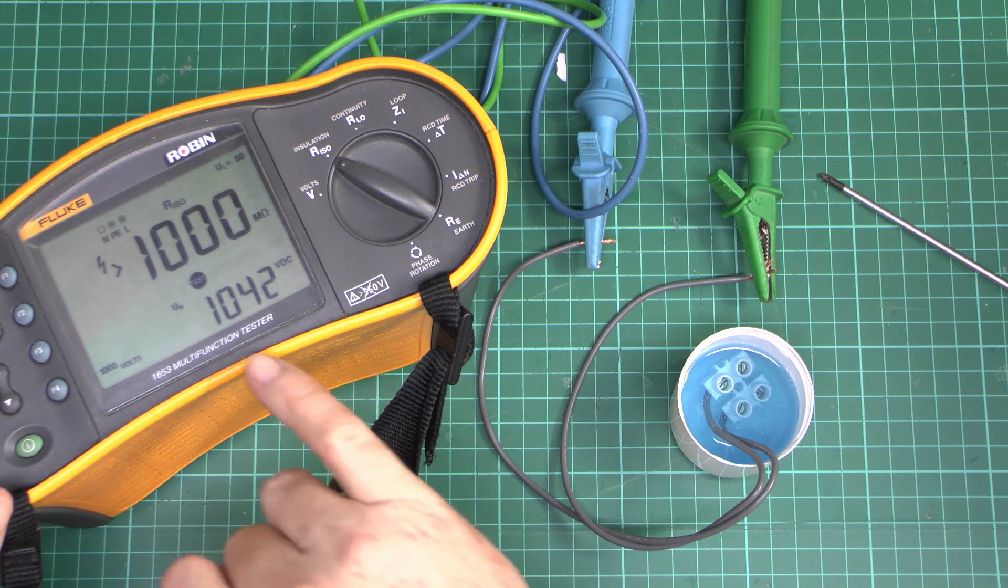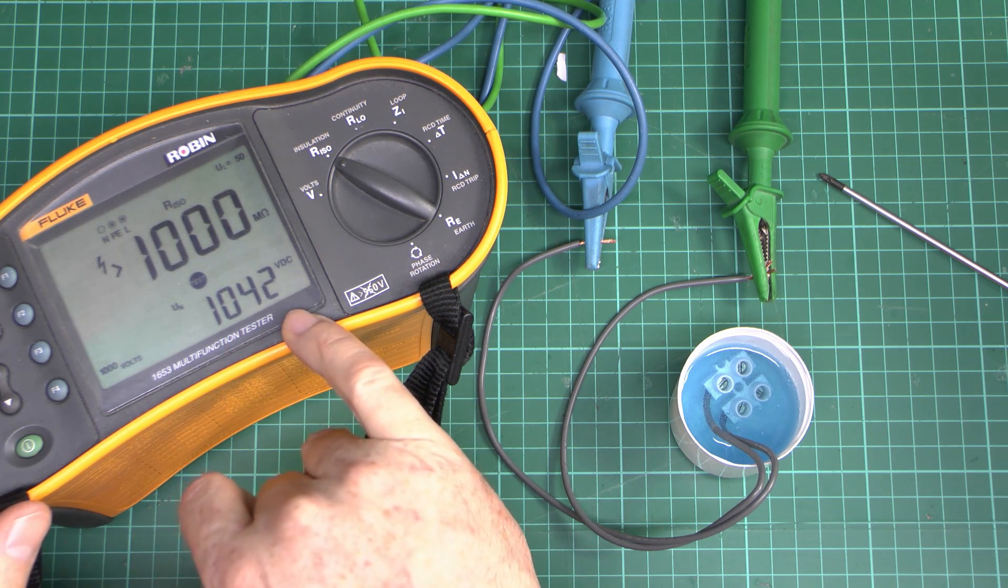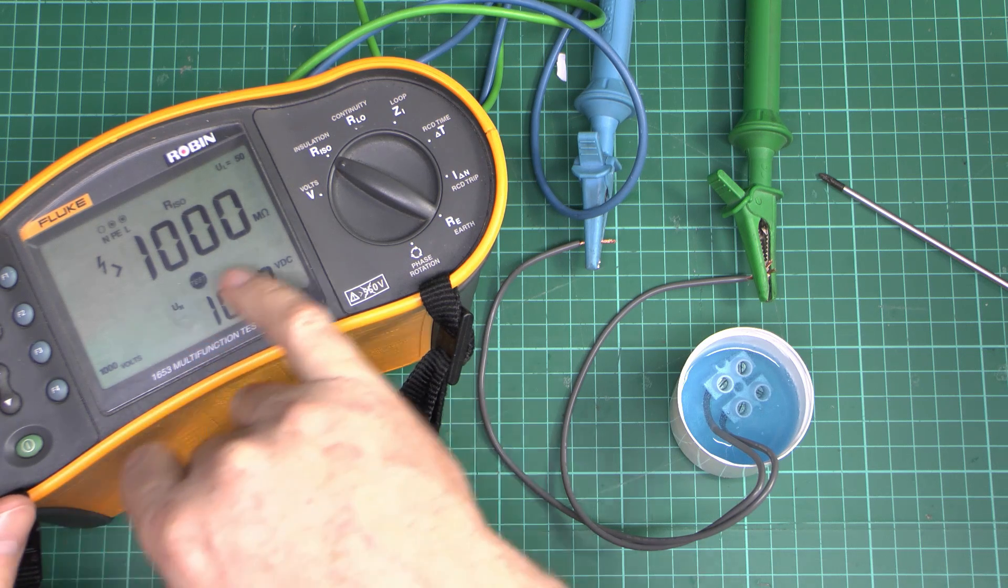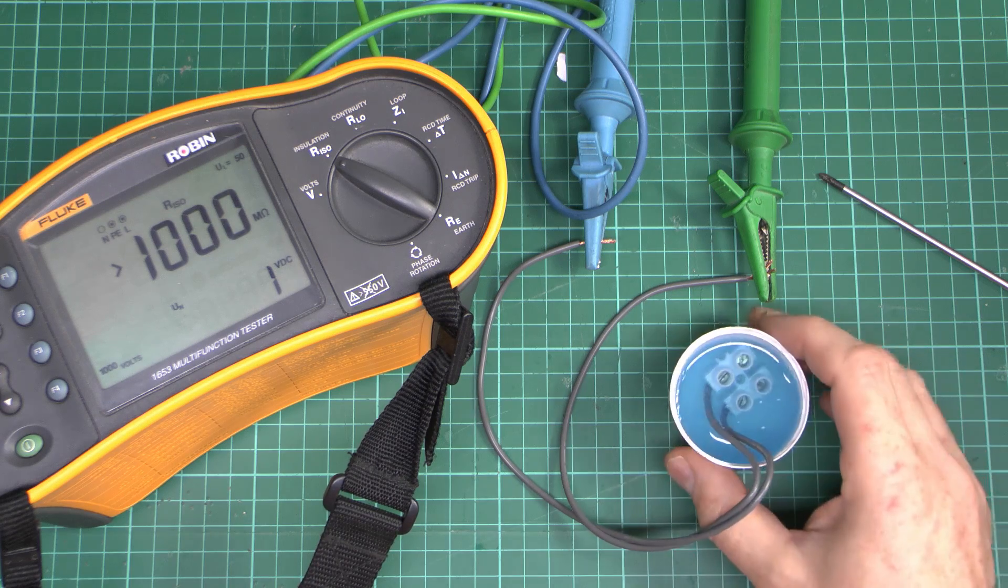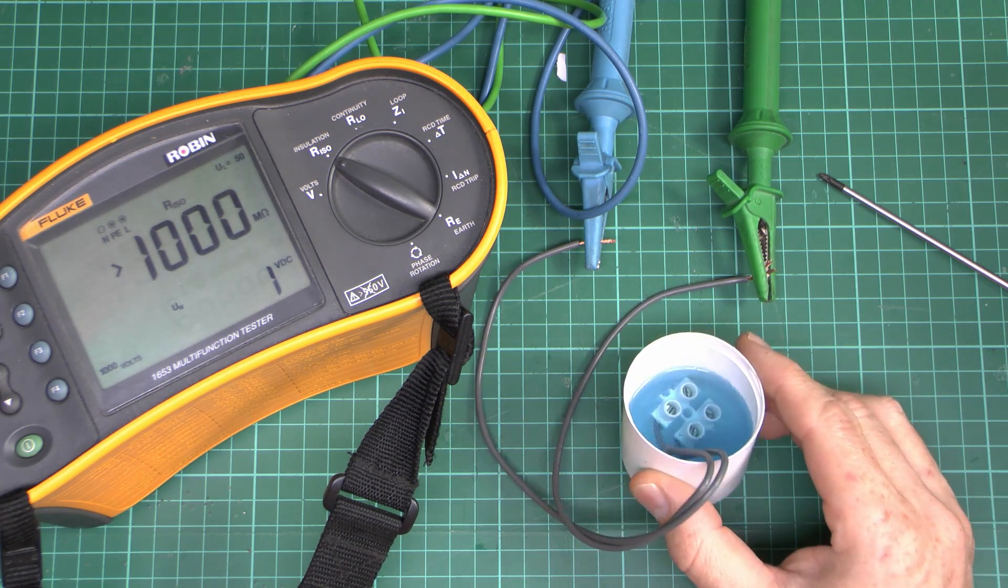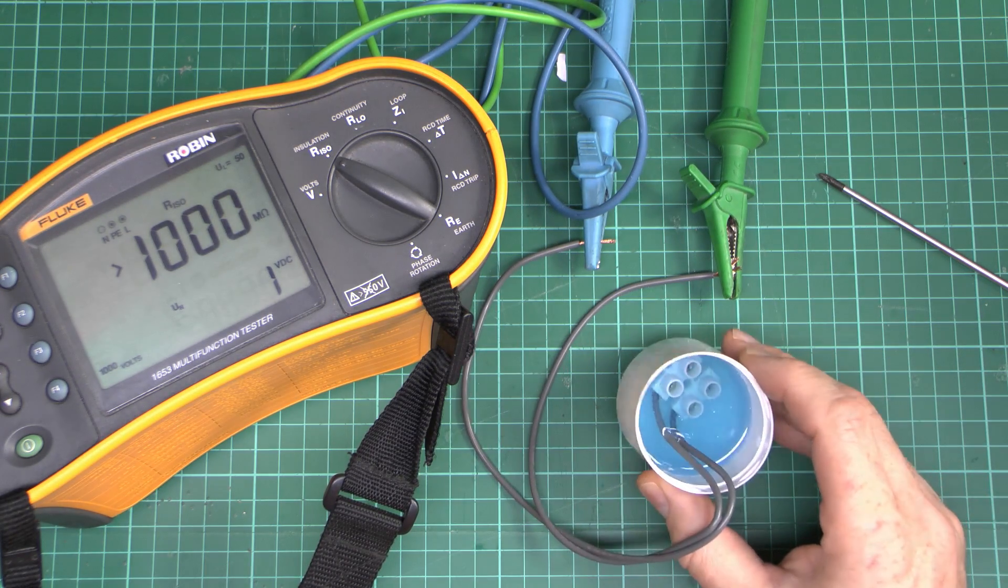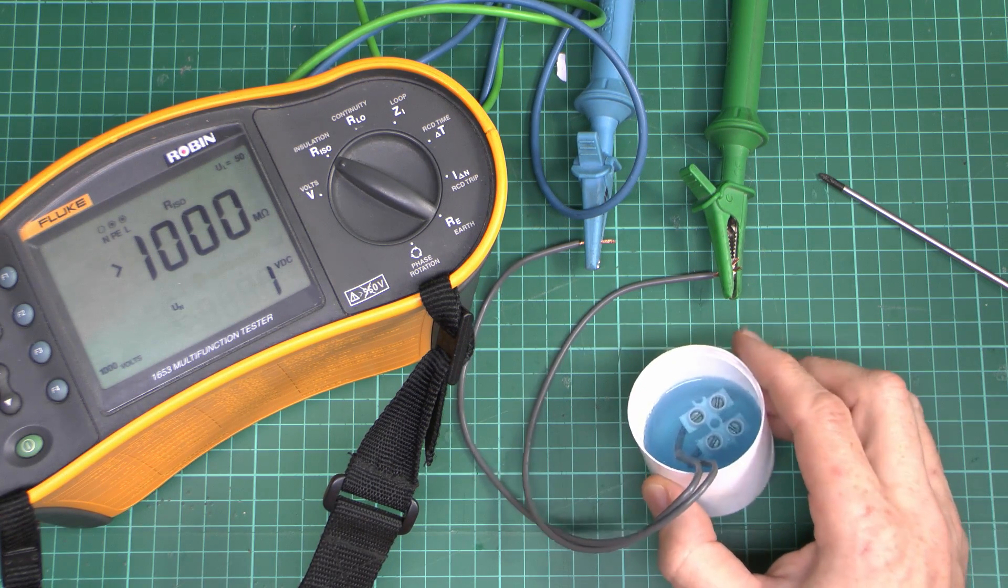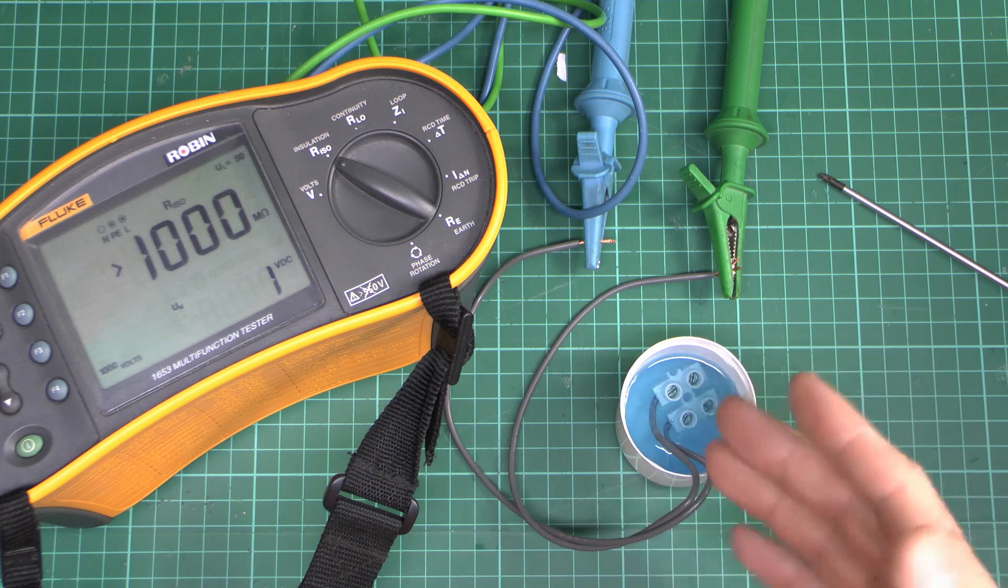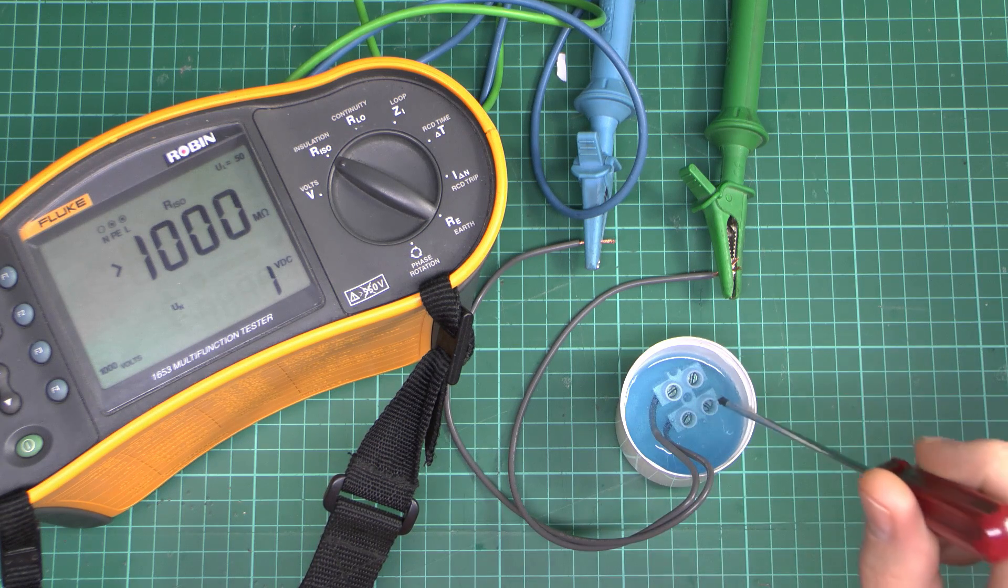So as you can see there, that's applying a test voltage of 1042 volts. And the resistance we're getting is greater than 1000 megaohms, basically more than one gigaohm. And that's despite it being in this what appeared to be a liquidy thing before, but of course there's no water involved there. And it's a completely insulating material.